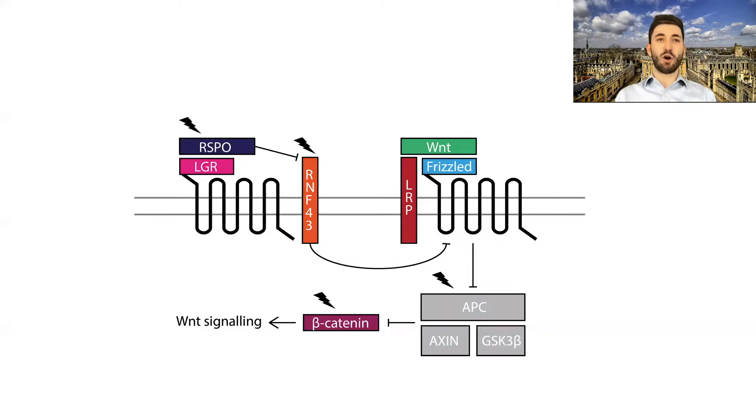The Wnt signaling pathway is recurrently mutated in colorectal cancer, with mutations seen in pathway components including R-spondin, RnF43, beta-catenin and APC. In the case of R-spondin, these mutations take the form of gain-of-function fusion genes.